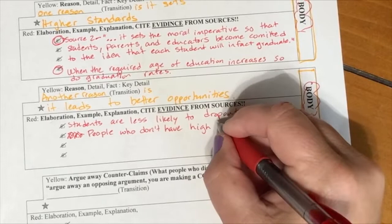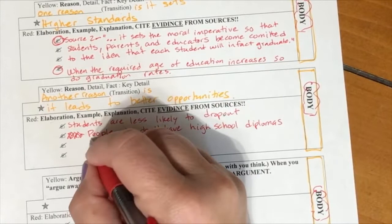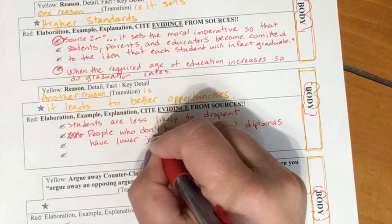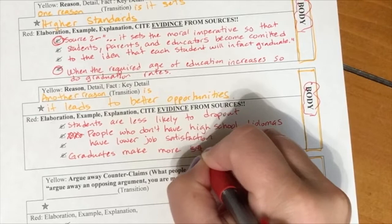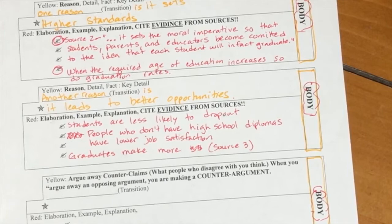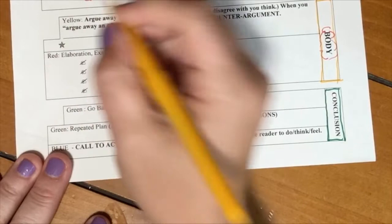You can find the evidence that you feel best supports your opinion. Now, if you have the opposite claim, that they should not be required, then you're going to have completely different reasons and you're going to look for completely different sources. I could argue either side of this based on the information that was given. I'm not saying this has to be your argument. This is just the most common one. So whatever your claim is, find your reasons to support that.